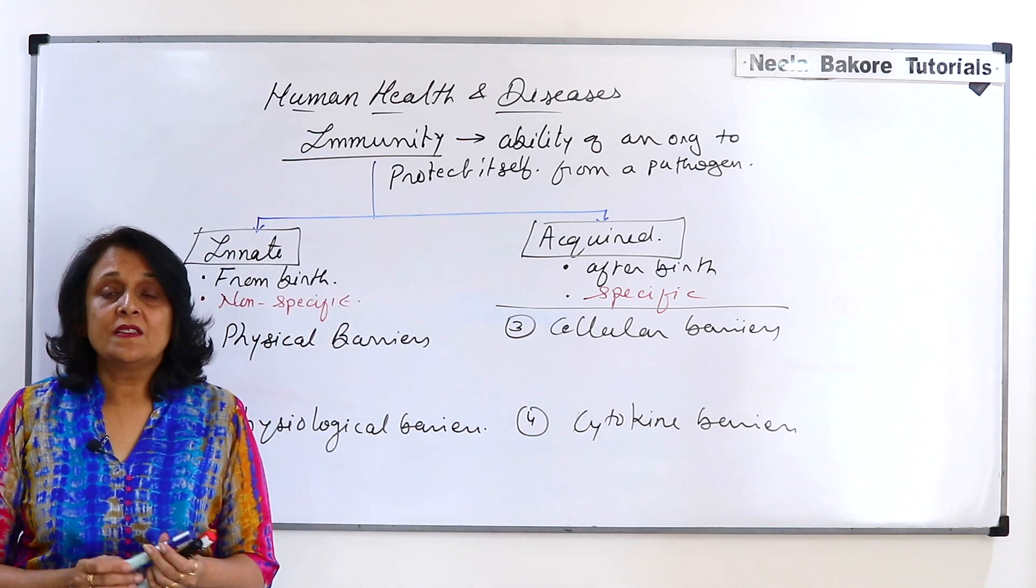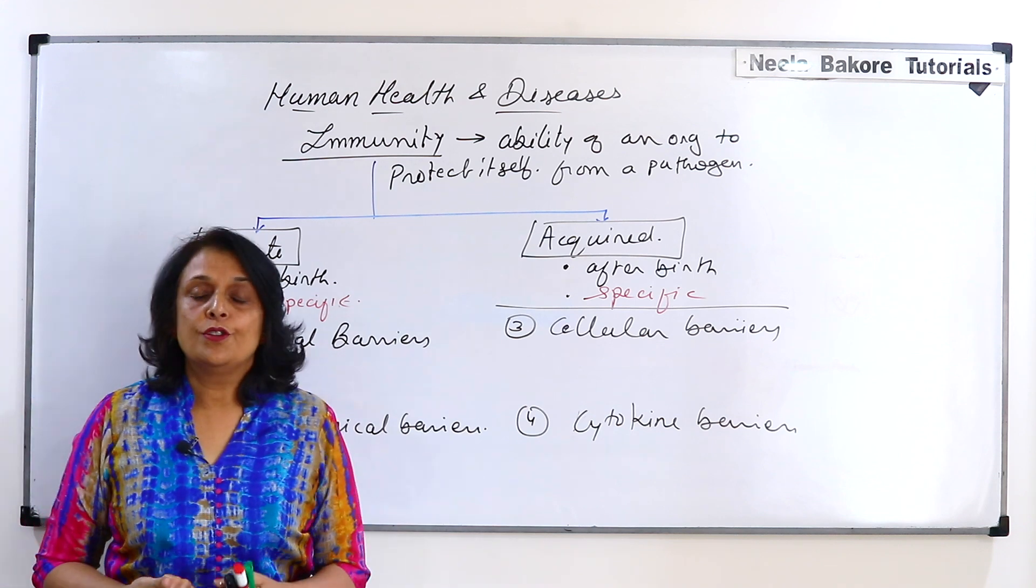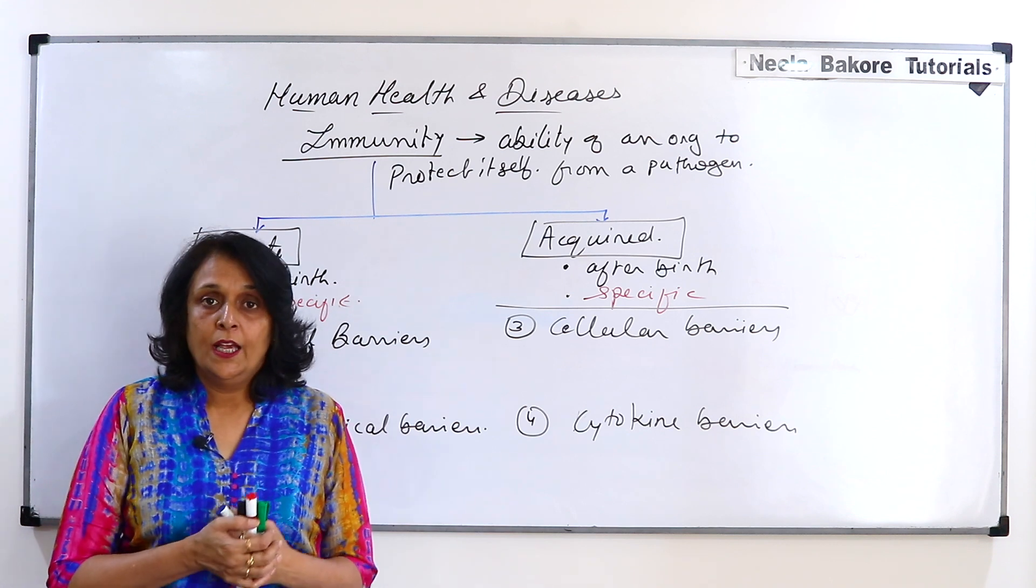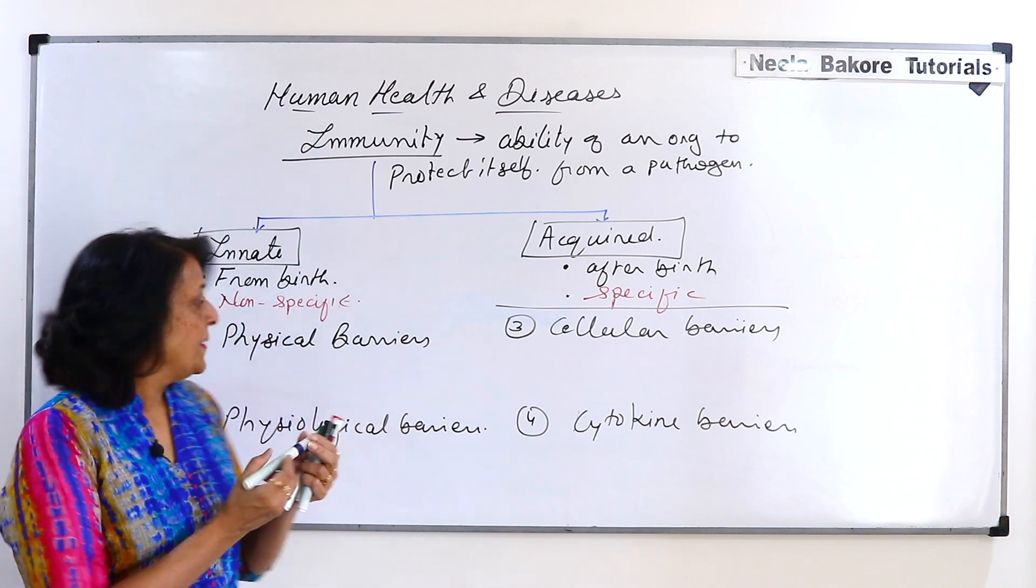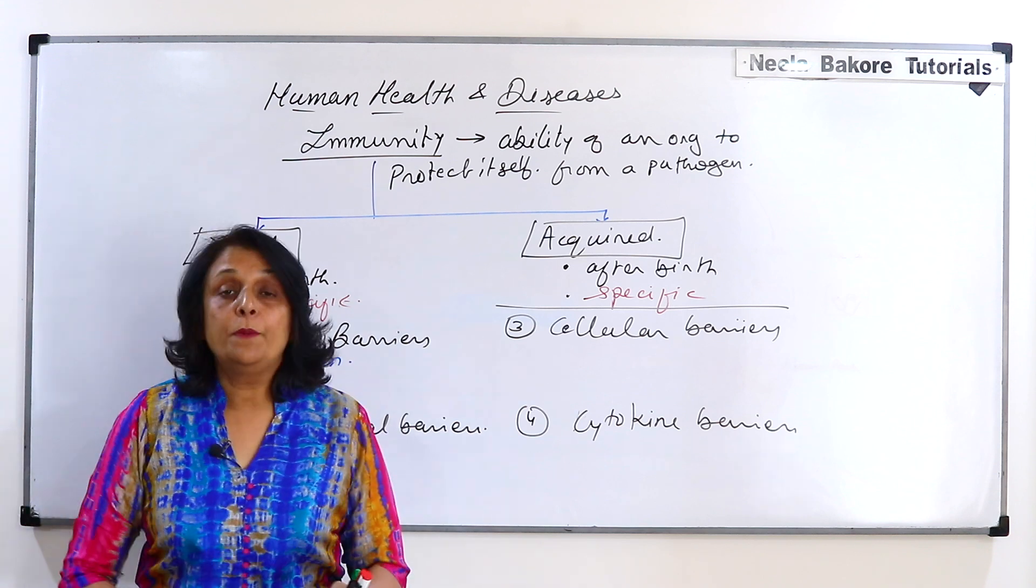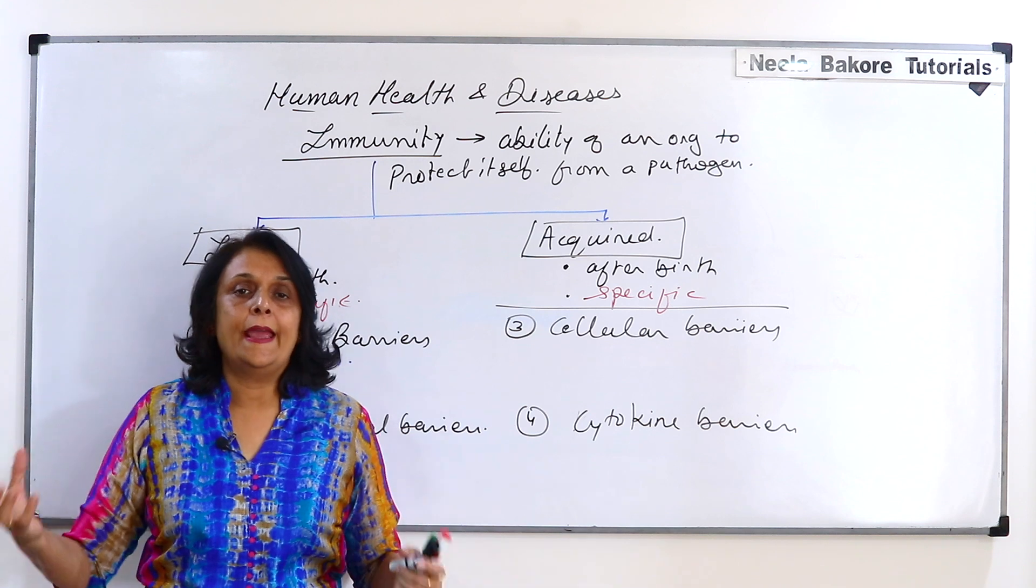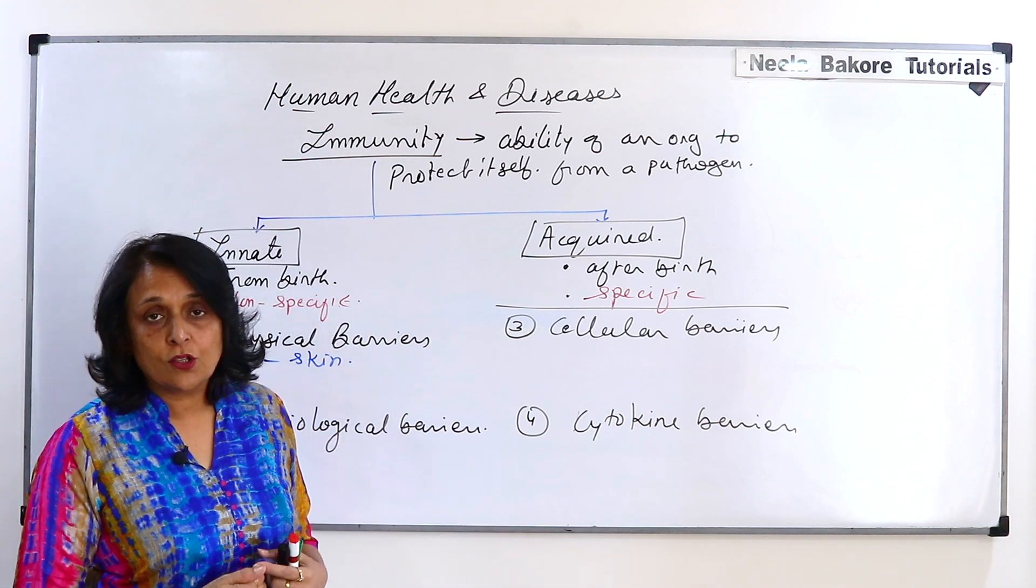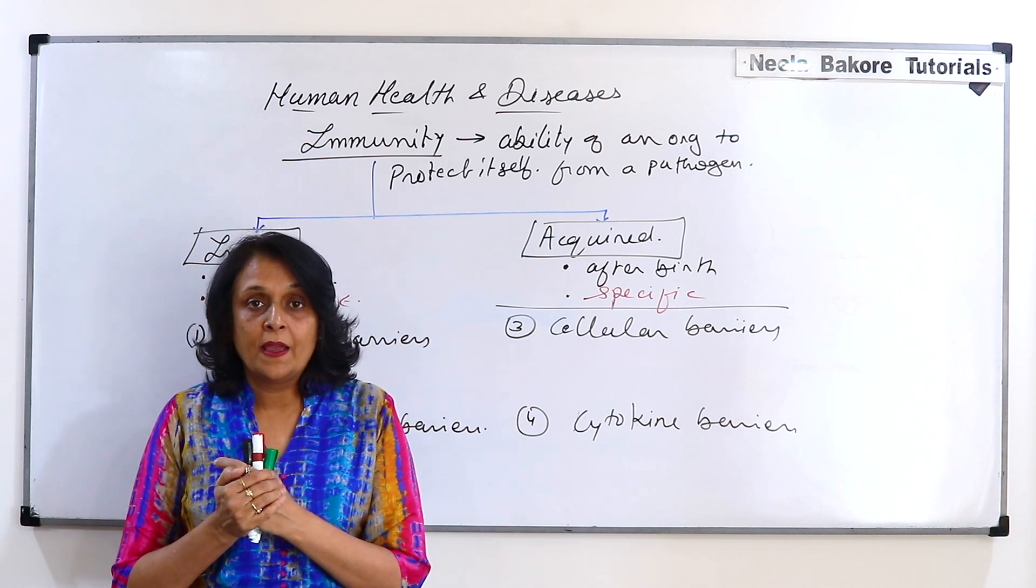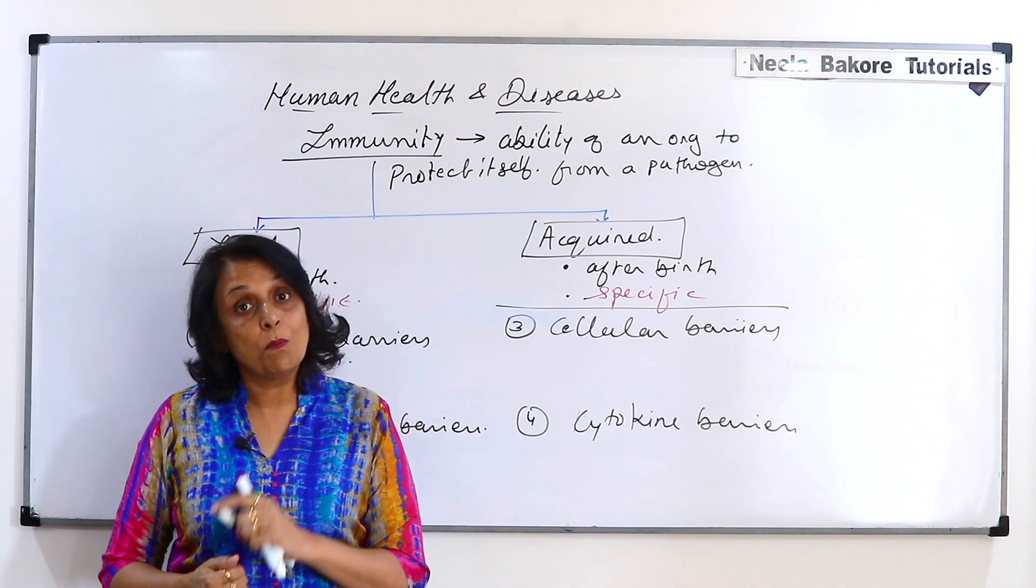Physical barrier means there is a layer or a membrane which is going to protect from the disease-causing organisms getting into our body. So our skin is a physical barrier. It protects our body from the surrounding. If there is any pathogen in air or water, it cannot penetrate this physical barrier of ours. So chances of infection are when there is a cut, when this barrier is broken down.